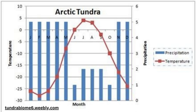The long, dark winters last for several months with little to no daylight in some areas. Pictured is a climatogram of the Arctic tundra. From this graph, we can infer that when temperatures are higher, precipitation tends to be lower in the tundra.